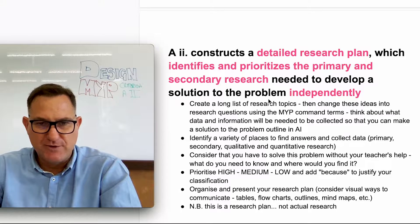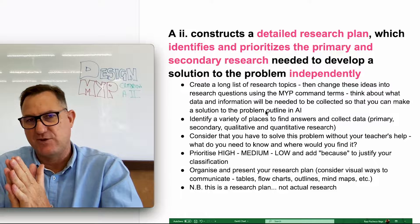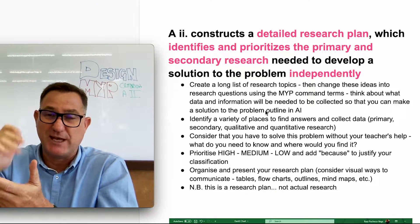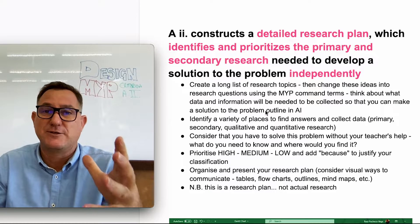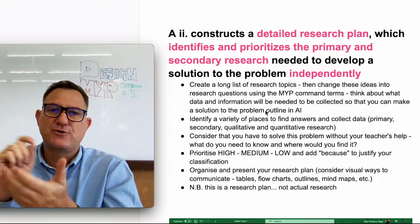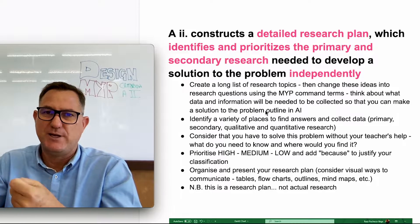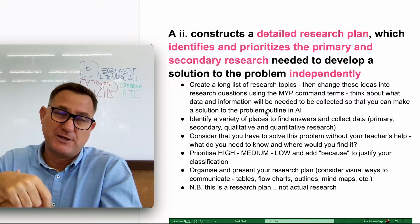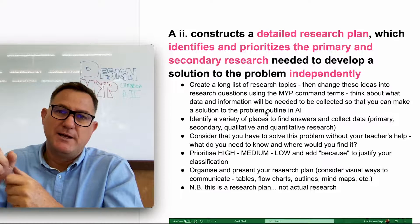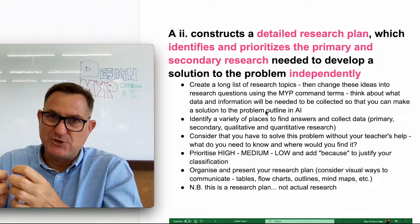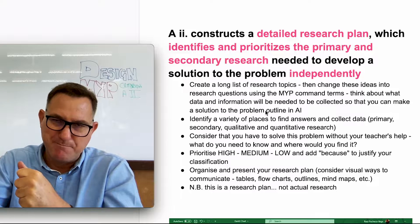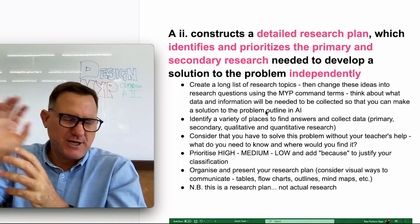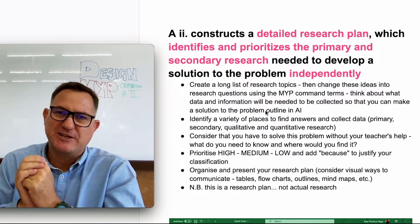Here's an easy process to make this work. First, come up with a bunch of research topics through brainstorming — you can do this with a friend or as a class, using post-it notes. Think about what topics you need to know about in order to make your product — the solution you identified in Strand 1. Come up with loads of different topics and things that you need to research.